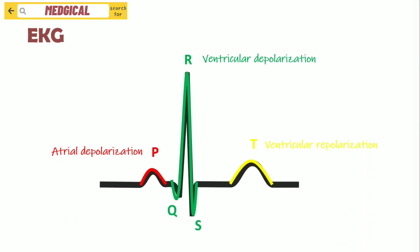P wave represents atrial depolarization. PQ segment represents the time signals travel from the SA node and pass over the AV node. QRS complex represents ventricular depolarization, and T wave represents ventricular repolarization.